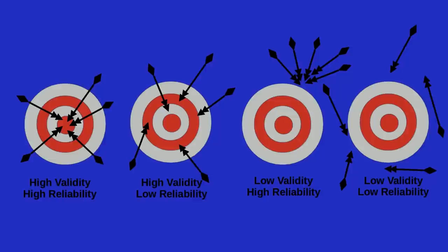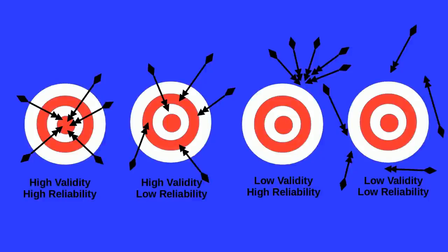One commonly used demonstration of reliability and validity is archery. Hitting the target is validity. In our research, our target would be a construct that we are interested in operationally defining. The instrument that we use to measure the construct is our operational definition, and we want to make sure that our operational definition is hitting the target. That is, it is measuring whatever abstract construct we want to measure.